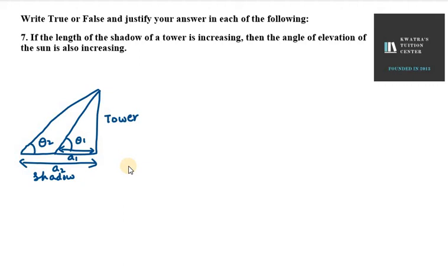then you can see that the angle of elevation of sun is reduced. So my theta2 value is less as compared to theta1. So this means that the angle of elevation is also decreasing.